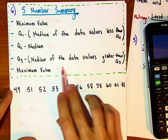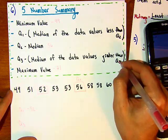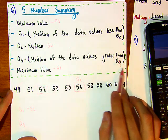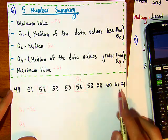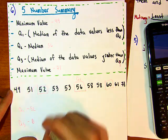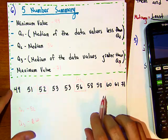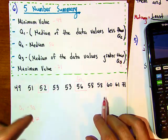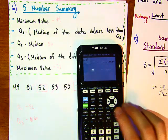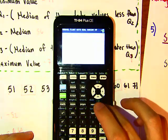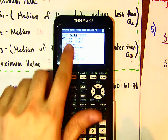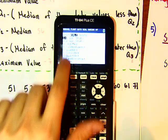For Q3, find the median of the data values greater than Q2. Those values give a median of 60, so Q3 = 60. That completes the five-number summary: minimum = 49, Q1 = 52, median = 56, Q3 = 60, maximum = 71.